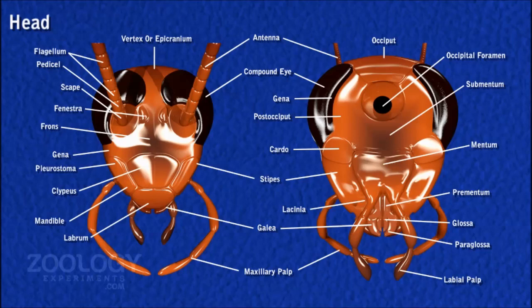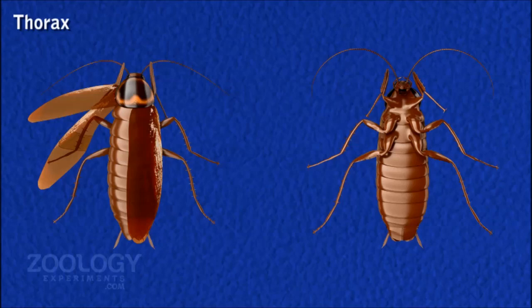On each dorso-lateral side of the head is a large black compound eye. Just in front of each eye is a long, slender, and multi-segmented antenna. Inner to the base of each antenna is a small, rounded, whitish area called the fenestra, representing a simple eye. The lower end of the head bears the pre-oral cavity and mouth surrounded by mouth parts, which consist of the labrum, mandibles, maxilla, labium, and hypopharynx.